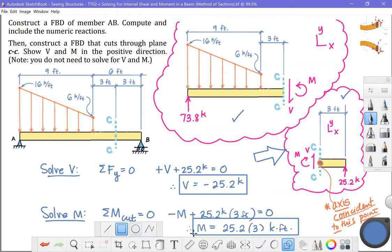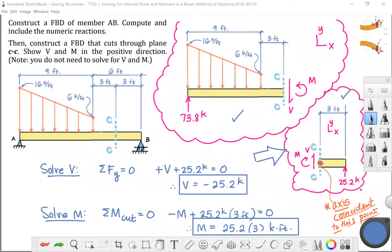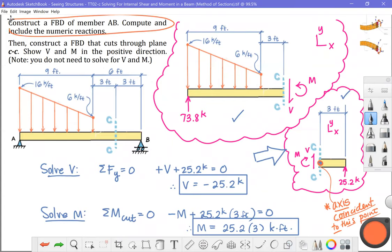There you go. So the correct solution to this problem, we did this free body a little earlier. Problem asks you to come up with two free bodies. So we did a free body of member AB first, including the numeric reactions. And then we showed a free body that cuts through the plane CC. You're asked to show V and M in the positive direction, but you don't need to solve for them. So that means you're going to pick either this one or this one to communicate that information. That's the end of this video. Thanks for watching.